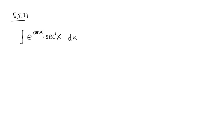For problem 5.5 number 31, we are going to integrate e to the tangent x times secant square x. As usual, we have to think about what's my choice of u. In this case, we have e to the tangent x multiplied with secant square x.